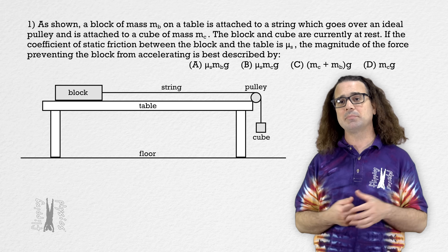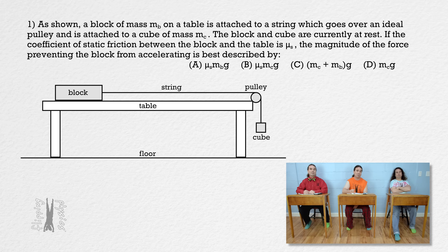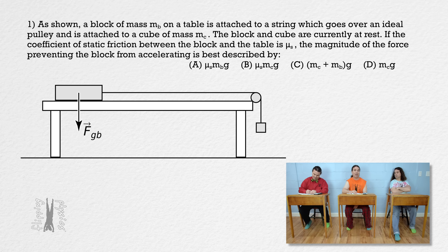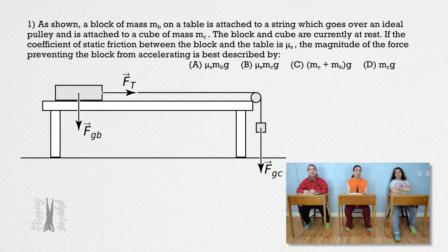Please begin solving the problem. We start with the free body diagrams — plural — because we need a diagram of all the forces acting on the block and a diagram of all the forces acting on the cube. There is a force of gravity acting down on the block and a force of gravity acting down on the cube. There is a force of tension on each end of the string, one acting to the right on the block and one up on the cube.